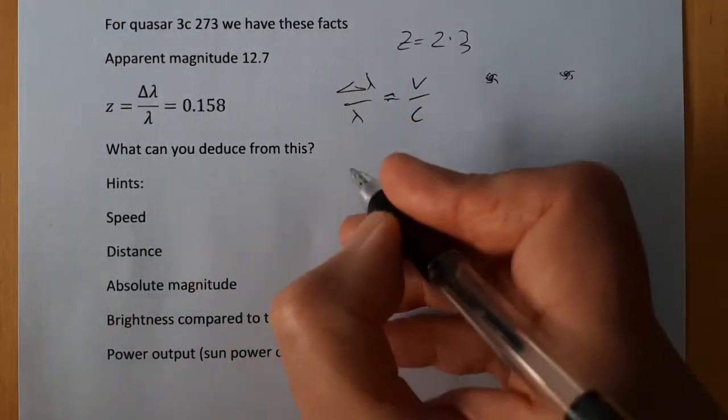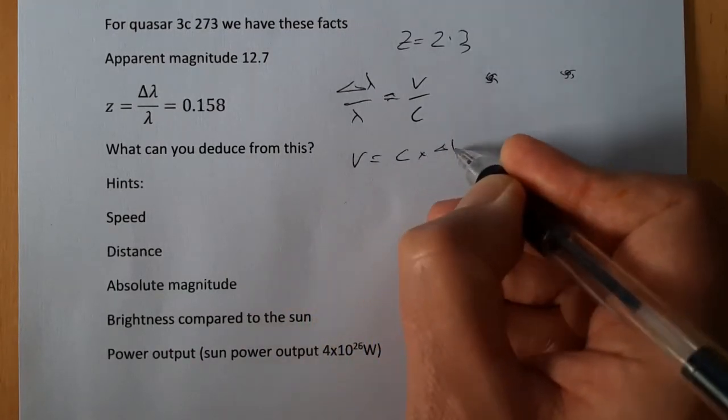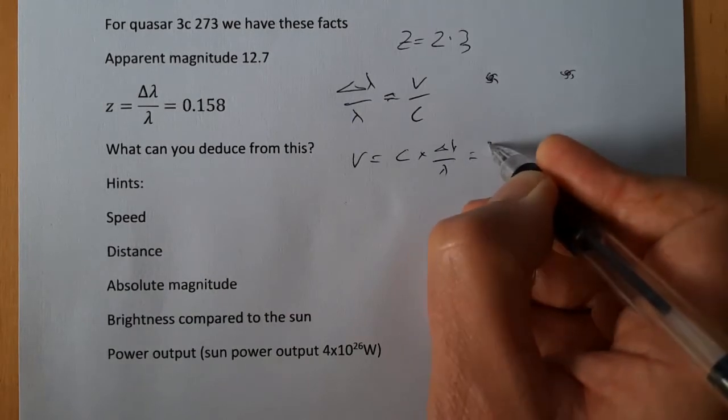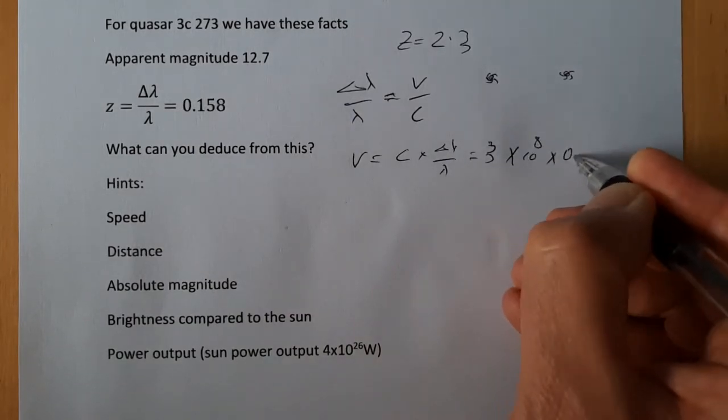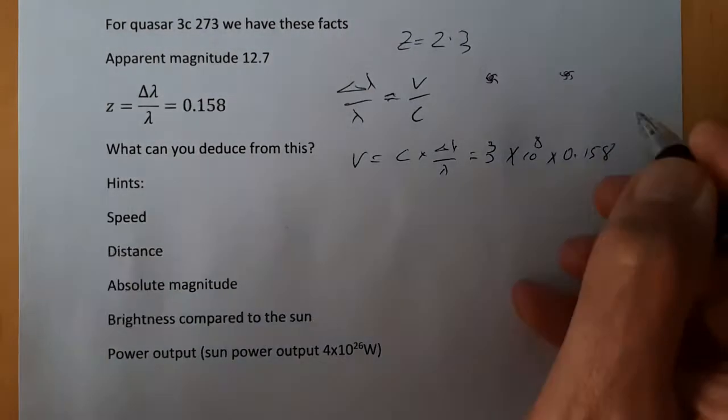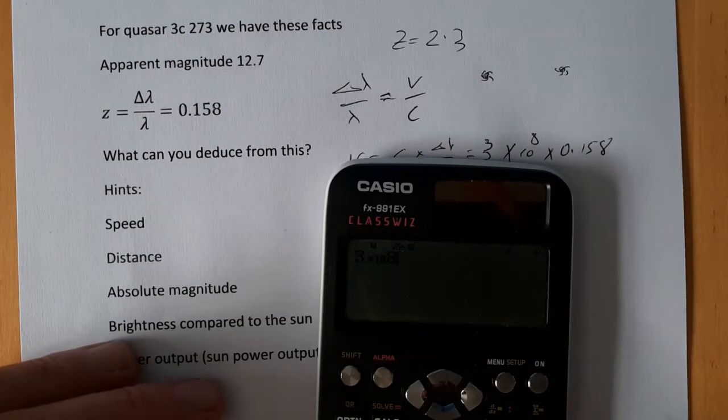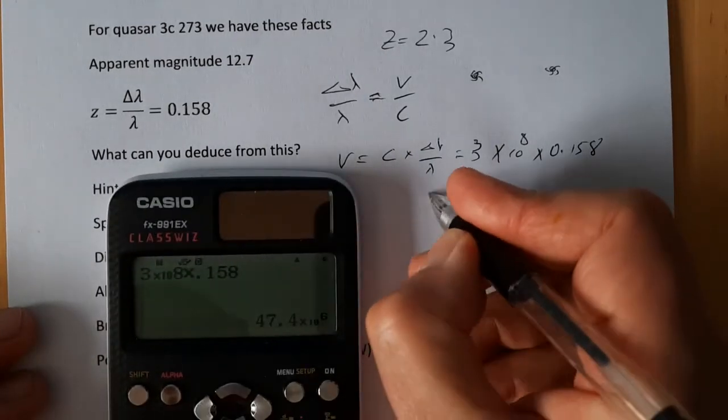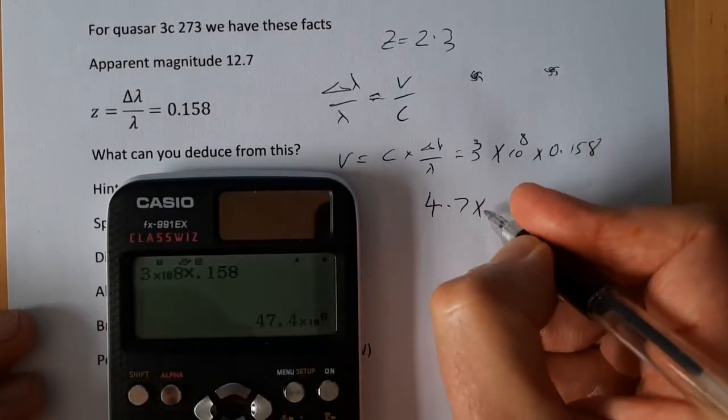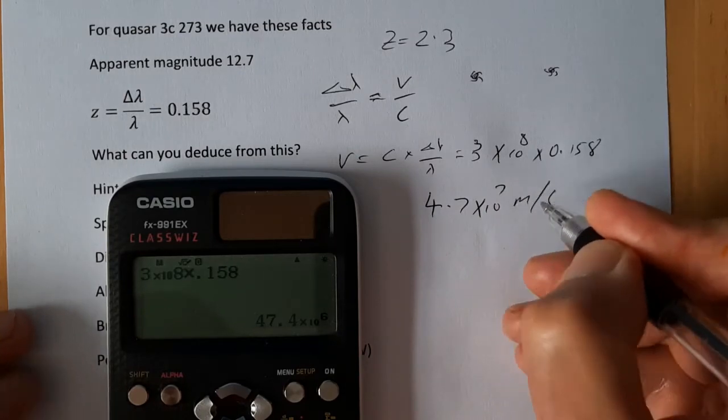So let's carry on working out the speed. The speed is the speed of light times delta lambda over lambda, which is three times ten to the eight times 0.158. Surely even I can get this right on a calculator. It gives four point seven times ten to the seven metres per second.